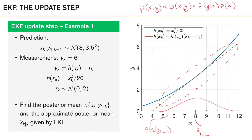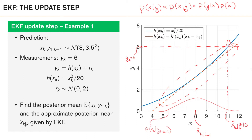To get the approximated posterior, we use that p of x given y is proportional to the joint. Fixing yk equal to 6 — our observation — we view the posterior as a slice of the joint where yk is fixed to 6. Illustrating this slice, the density comes out of the figure, and the mean of this density gives our EKF estimate. Projecting down to the x-axis, the mean that the EKF gives us is roughly 10.8.